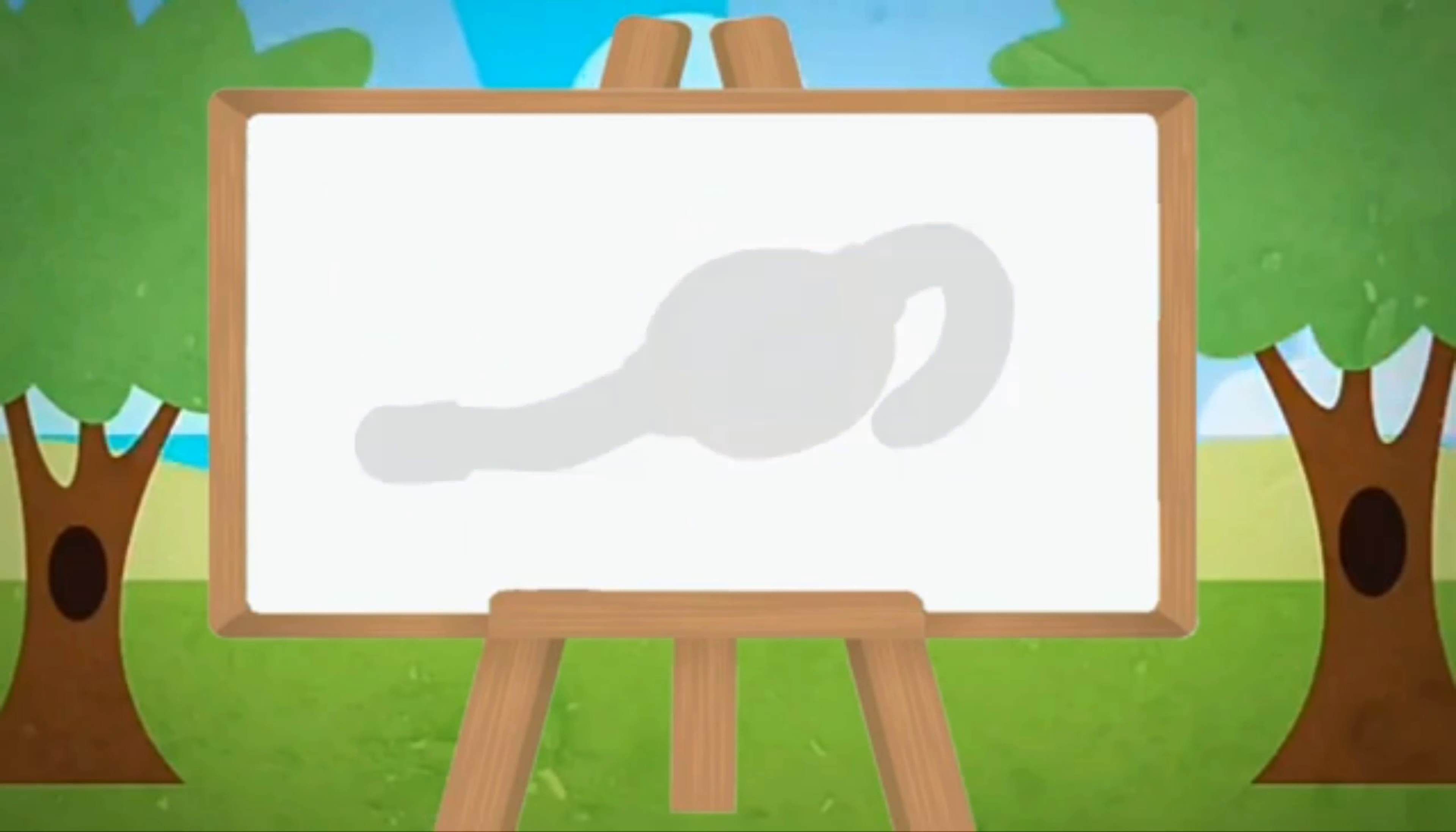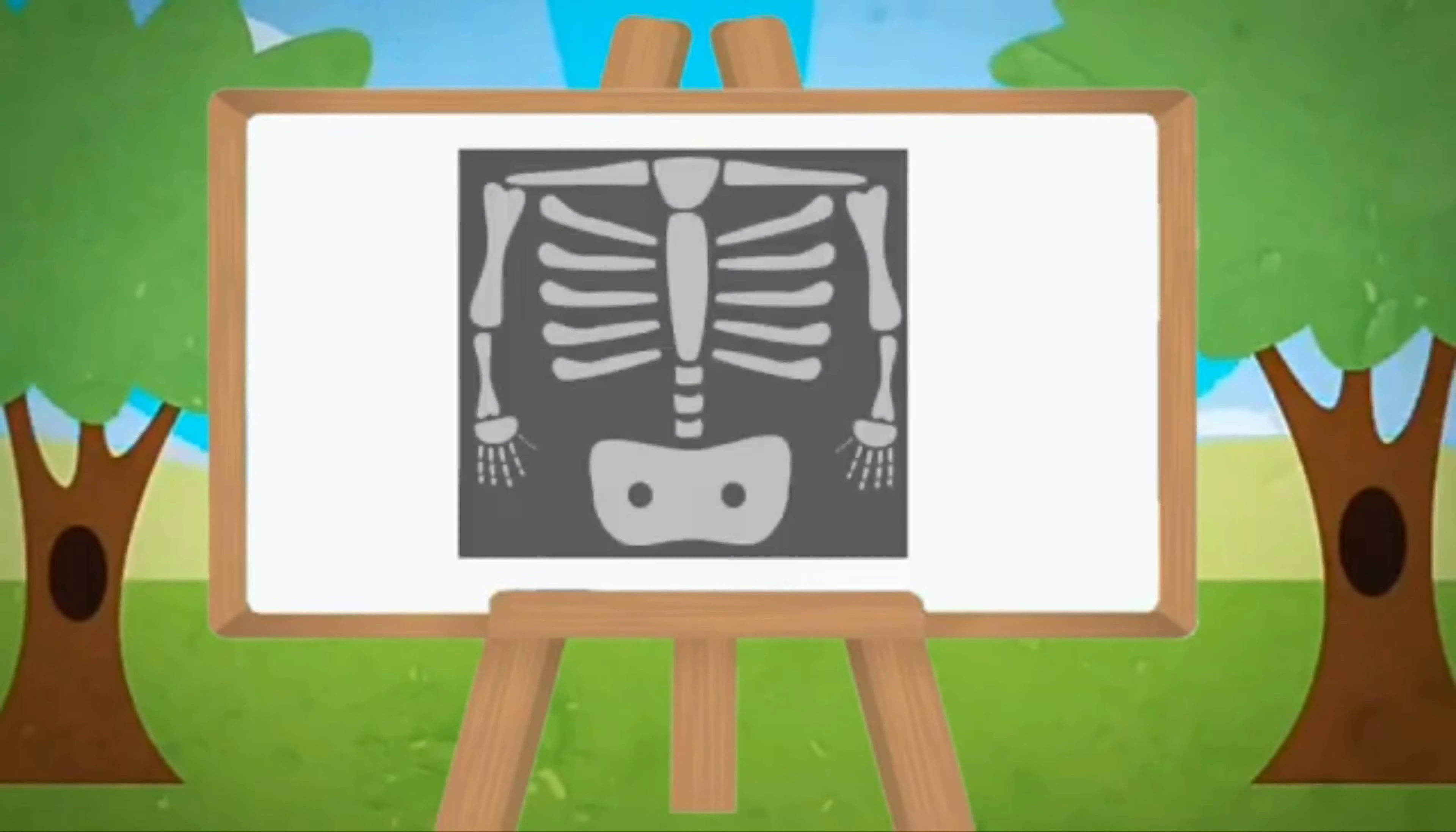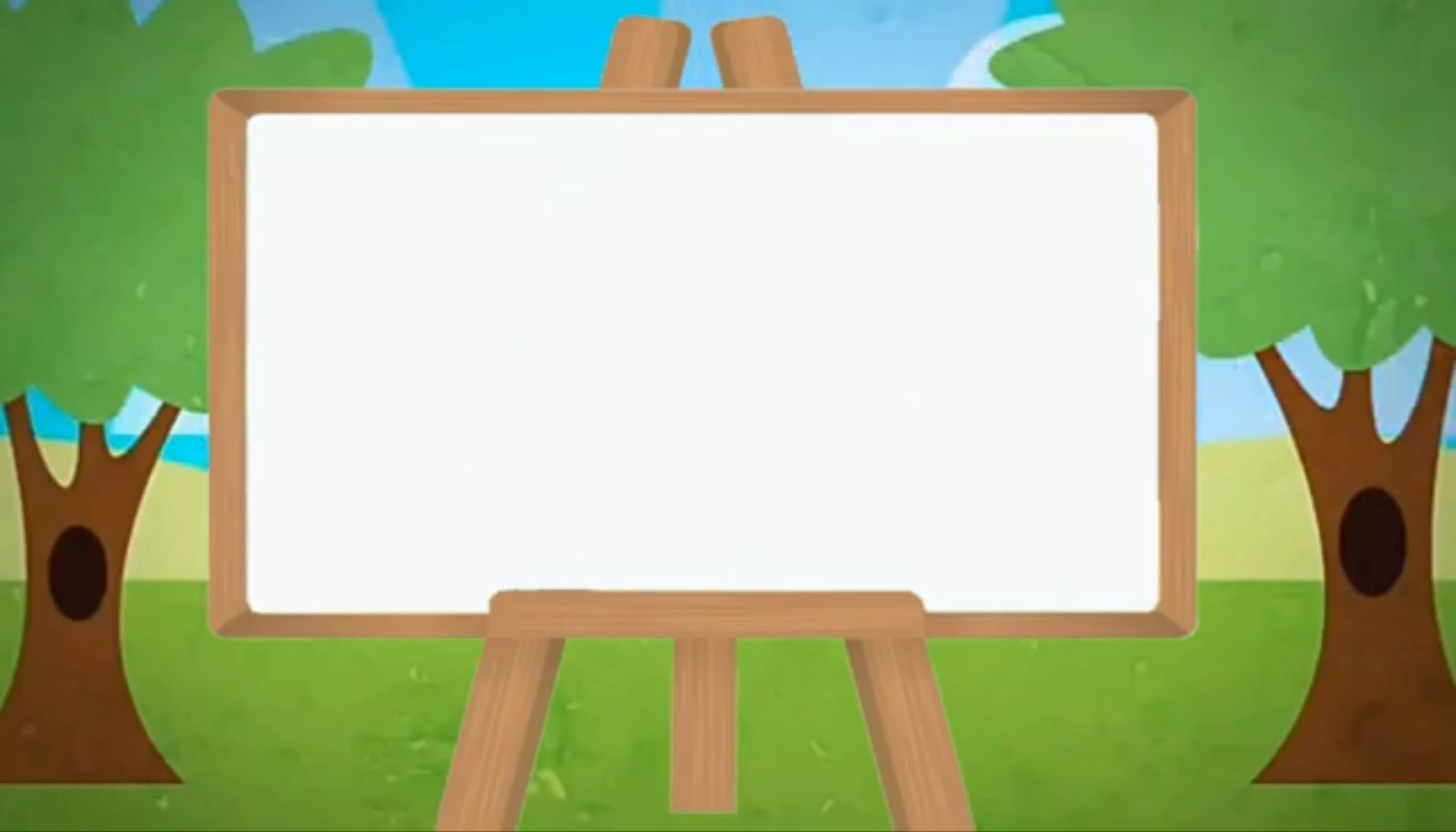Capital X, small x. X for Christmas tree, X for x-ray. Capital Y, small y. Y for yak, Y for yarn.